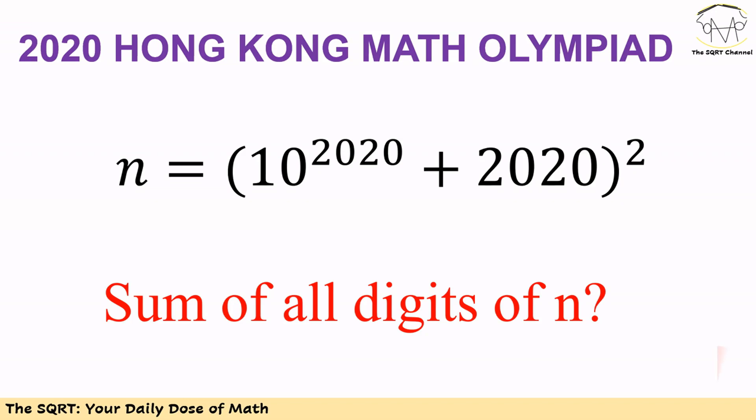Hello everyone. In this video, we're going to talk about a problem from the 2020 Hong Kong Math Olympiad. We have a number n where n = (10^2020 + 2020)^2. We want to find the sum of all the digits in n. Before moving forward to the solution, make sure you pause the video to think about the problem.